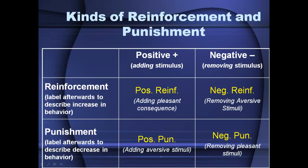Negative punishment is still punishment — it's designed to decrease behavior, but it does so by removing pleasant stimuli. For example, not getting to use your car anymore: most people consider their car a pleasant stimulus, so having it removed is negative punishment. A boyfriend or girlfriend saying 'no more hugs for you' is negative punishment. If you remember Jerry Seinfeld, 'no soup for you' — the chef was saying you can't have this pleasant stimulus because you're not doing the appropriate behavior.